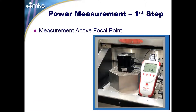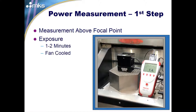Power measurement is the first step. In measuring a powder bed machine, measuring above the focal point is essential, as most power sensors do not have the power density to absorb the power at the focal point. Typically the power meter is located above the focal point where the power density is less — sitting on a stanchion where the beam is around three to four millimeters in diameter. Exposure of two to three minutes with a fan-cooled device gives a stable, uniform reading. This is much more effective than a single-shot measurement.